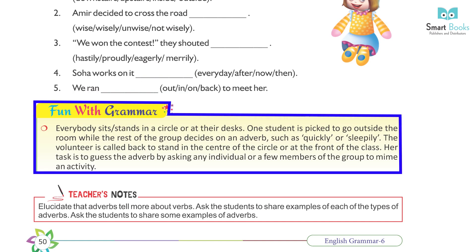Fun with grammar. Everybody sits or stands in a circle or at their desk. One student is picked to go outside the room while the rest of the group decide on an adverb, such as quickly or sleepily. The volunteer is called back to stand in the center of the circle or at the front of the class. Her task is to guess the adverb by asking an individual or a few members of the group to mime an activity.